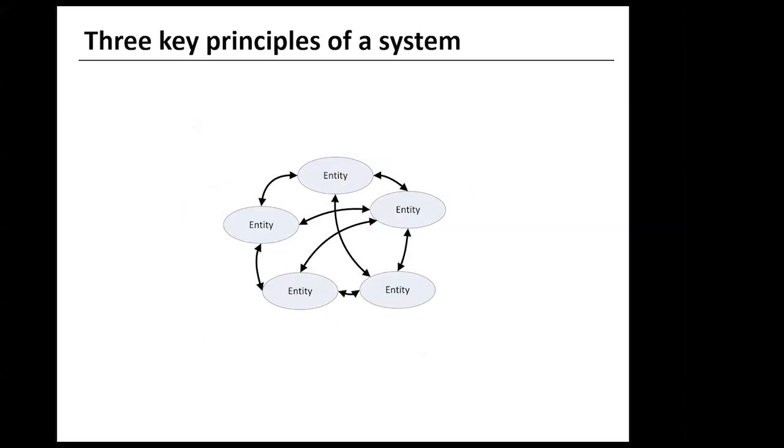But first I want to talk about three important principles underlying systems thinking. These are that a system has interrelationships between parts, that there are multiple perspectives about what is happening in a system, and that we always make boundary judgments about what the system is.